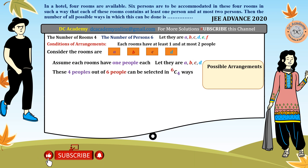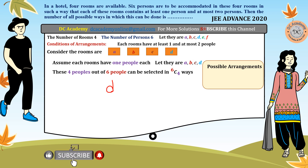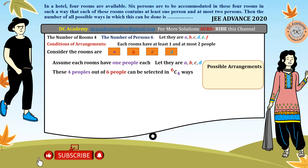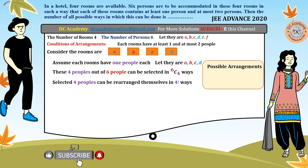Once the four persons are selected for the initial placement, they can arrange themselves among the four rooms. Since the hotel rooms are distinct (numbered), these four selected people can rearrange themselves in 4! ways. So the count so far is 6C4 multiplied by 4!.